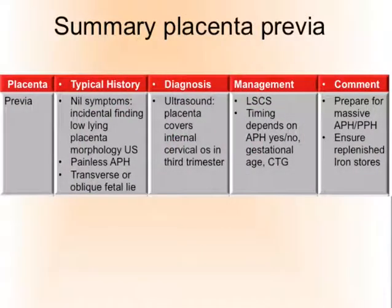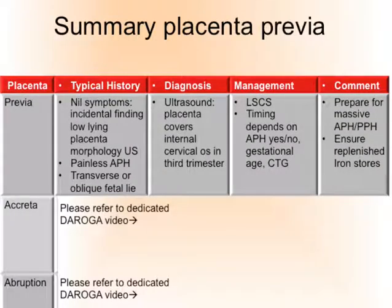In summary — placenta previa: the typical history is usually no symptoms whatsoever, most often an incidental finding of a low-lying placenta at a morphology scan. If symptoms, painless antepartum hemorrhage is the most typical. Transverse or oblique fetal lie could point indirectly at a low-lying placenta or placenta previa. The grayscale ultrasound scan is the diagnostic tool — very reliable and very sensitive. Management: caesarean section; timing depends on the presence, absence, and amount of antepartum hemorrhage, and whether there are CTG changes. Always prepare for massive antepartum and postpartum hemorrhage and ensure antenatally that her iron stores are replenished. For placenta accreta and placental abruption, refer to dedicated videos.